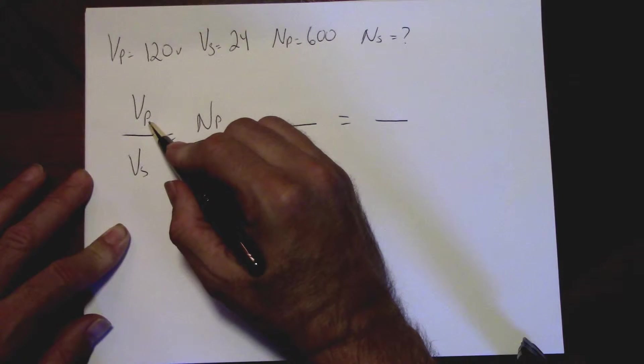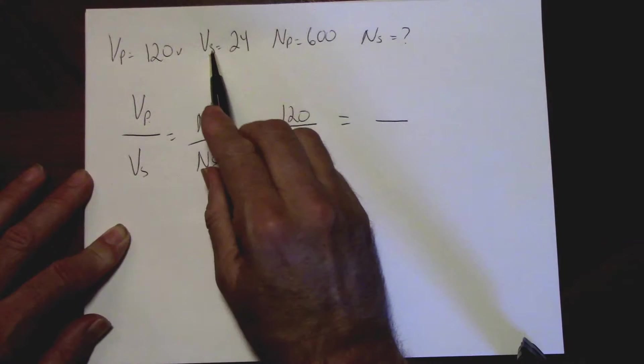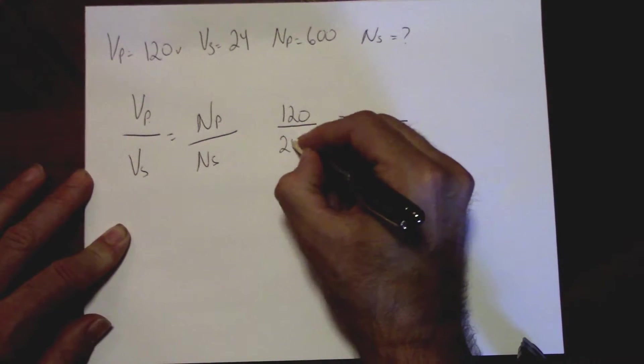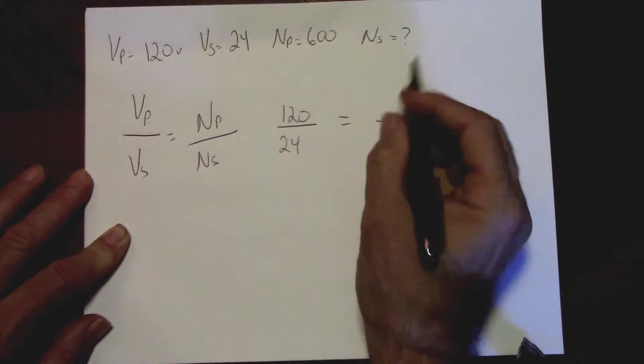Voltage primary was how much? 120. Voltage secondary is 24. Number of turns on primary is 600.